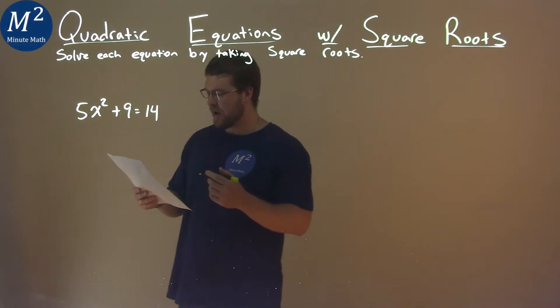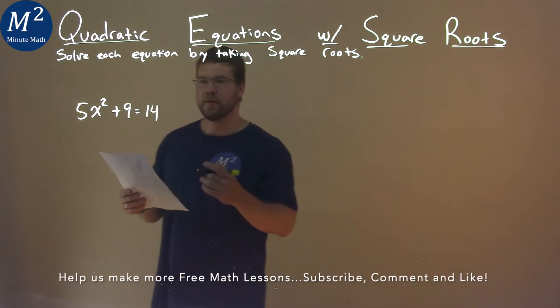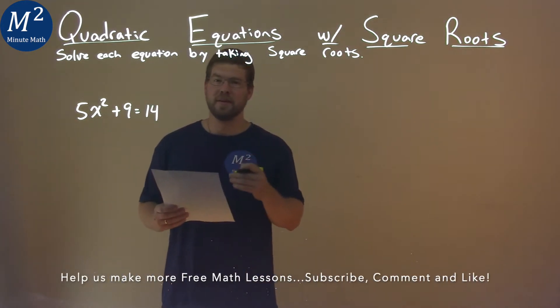We're given this problem right here. 5x squared plus 9 equals 14, and we need to solve this equation by taking square roots.